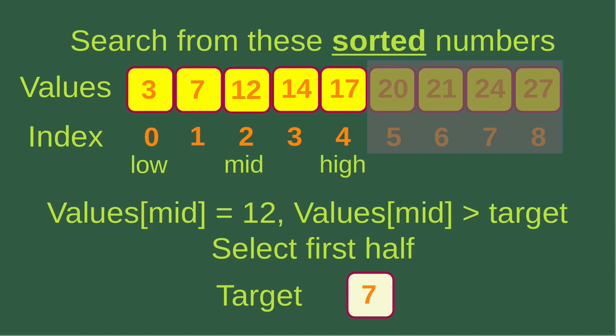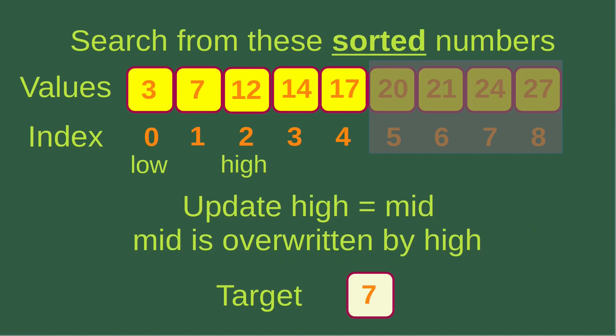Number 12 at the mid-index is still larger than the target of seven. So I select the first half of the array again, updating the high index to become the mid-index. Now the high index becomes two and the low index is still zero, and the mid-index is gone.